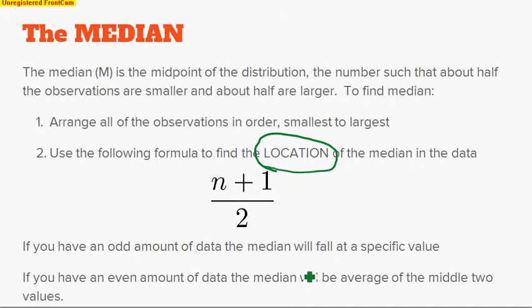If you have an odd amount of data, the median will fall at a specific value. If you have 1, 2, 3, 4, 5 pieces of data, then there is an exact middle right here. It has two values below it and two values above it. That is the median. If you have 1, 2, 3, 4, 5, 6 pieces of data, well, the median actually falls right here, where it's kind of like a no man's land. There's three values below, three values above, but there is no actual value dead set in the center. So to find the median in this case, you basically take the middle two values and average them together. You add them up and divide by two.